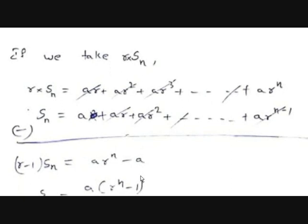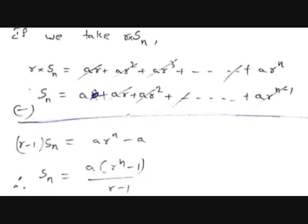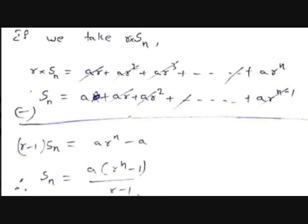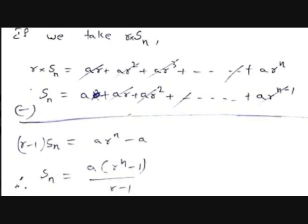This gives (r − 1)·Sn = a·r^n − a. Taking a common from the right side: a·(r^n − 1). Therefore, Sn = a·(r^n − 1) / (r − 1).